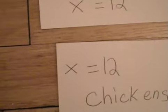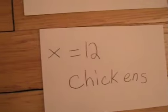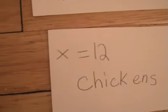But we're not finished. If X equals 12, that means there are 12 chickens.